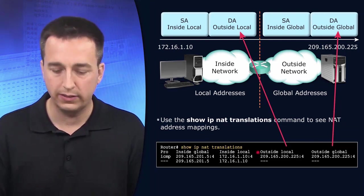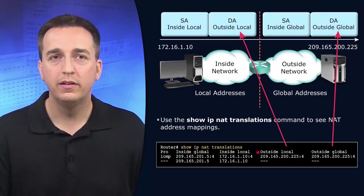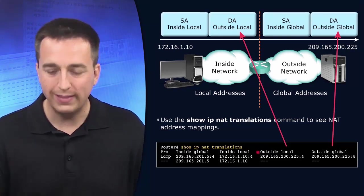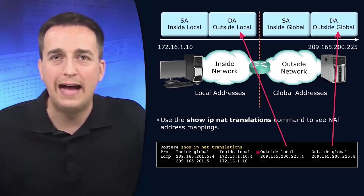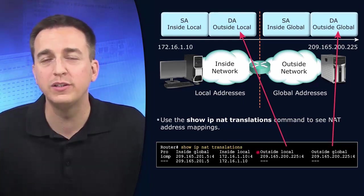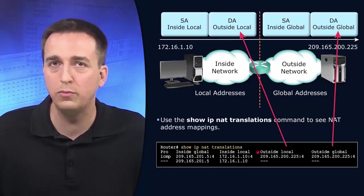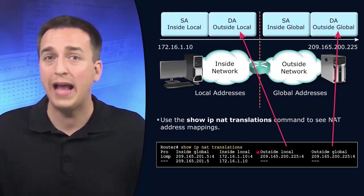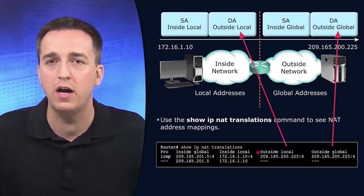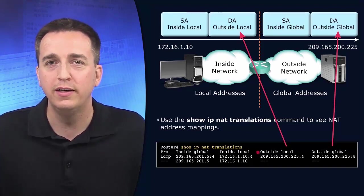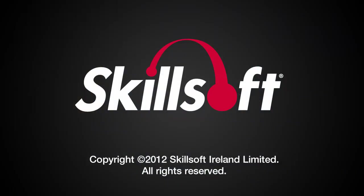Hopefully this has cleared up these four different IP addressing types for network address translation: inside local, outside local, inside global, and outside global. If it hasn't, just review this a few more times and hopefully it'll start to sink in.